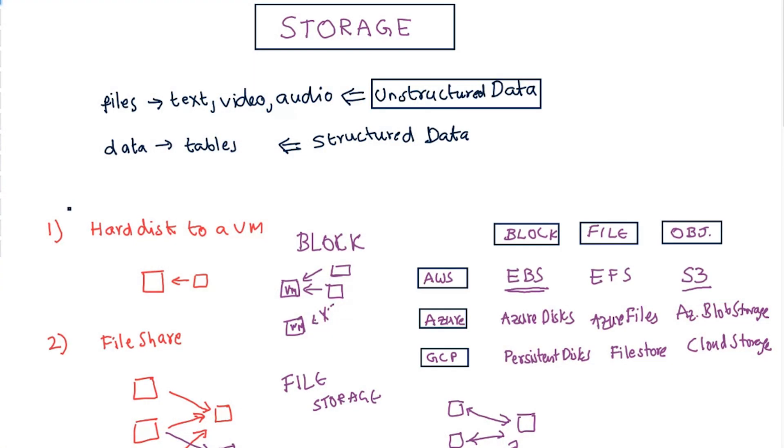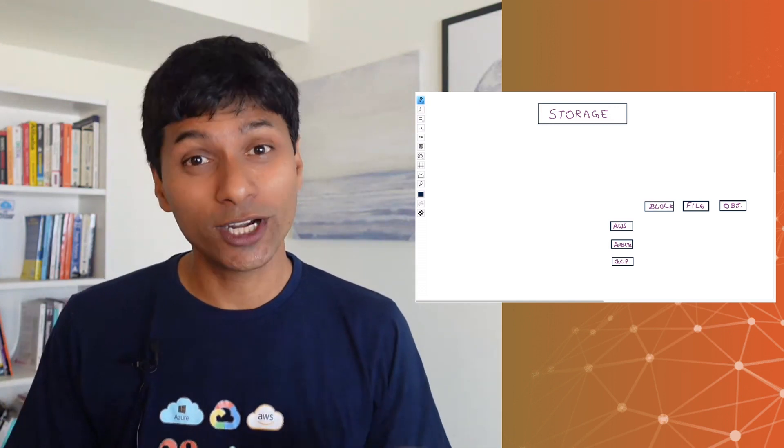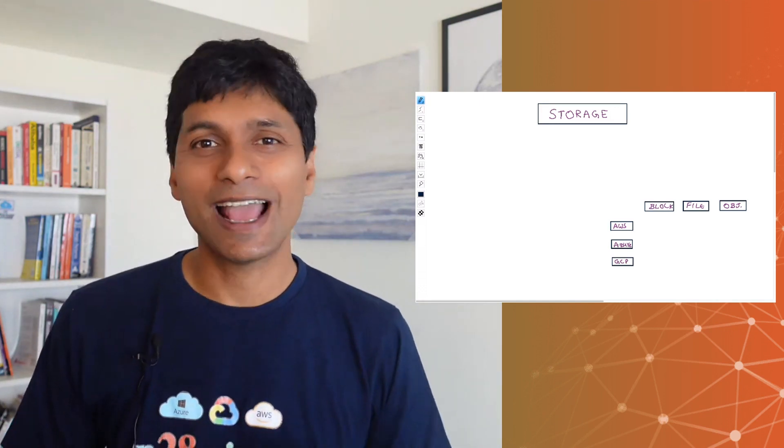There are different types of data that you would want to store — structured data and unstructured data — and you would want to store it in different ways. You might want to store them in a block storage device, a file storage device, an object storage device, or a database. We've used a lot of terminology. What does each one of those terms mean and what is the difference between them?